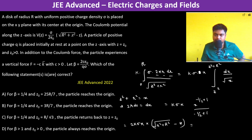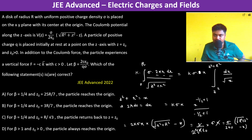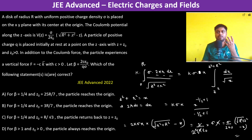Now k = 1/(4πε₀), and sigma·π divided by 4πε₀ simplifies — the π's cancel and we get a factor of 2 — so the final potential is sigma/(2ε₀) times [√(R² + z²) − z]. This is the potential due to the disk.